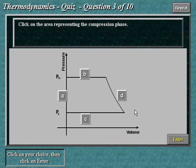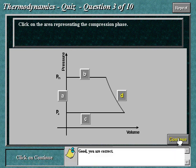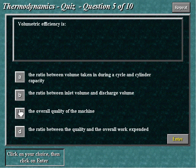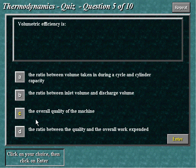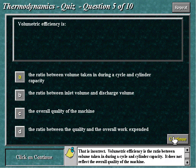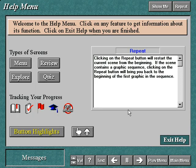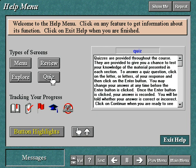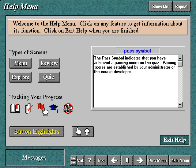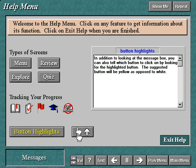Click on the area representing the compression phase. Good. You are correct. Volumetric efficiency is? That is incorrect. The correct answer is highlighted. Click on each topic to learn more.